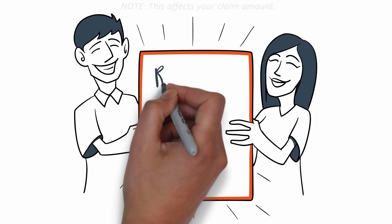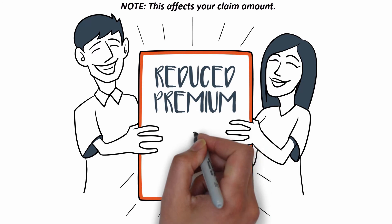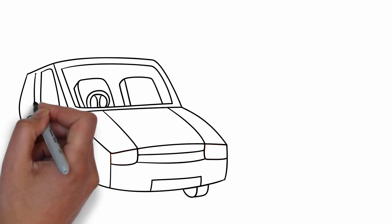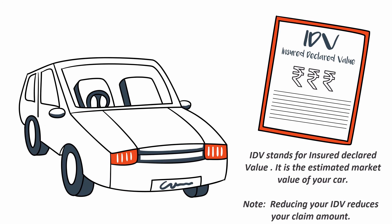With a well-adjusted voluntary deductible, the insurance premium amount gets reduced. Then Shania declared all their details, including the actual IDV of the car correctly.